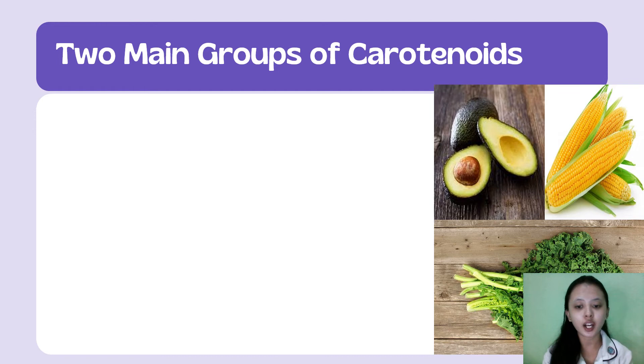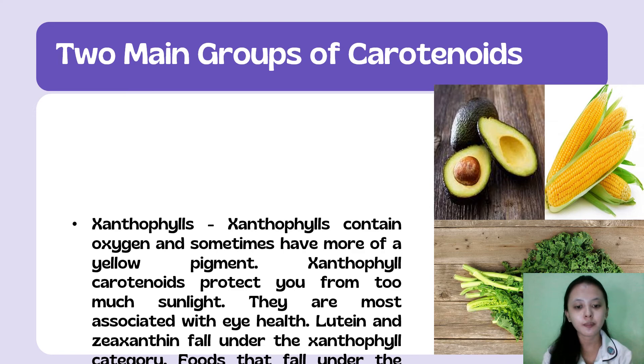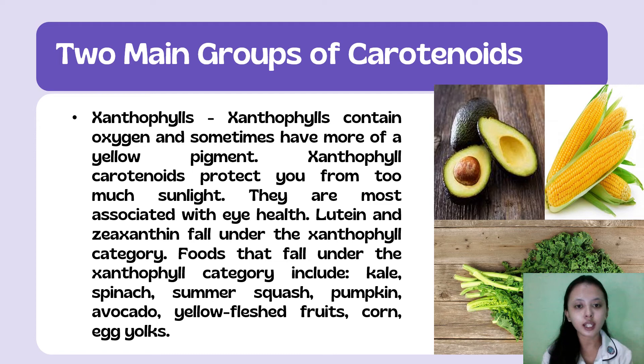Carotenoids are classified into two main groups: xanthophylls and carotenes. Xanthophylls contain oxygen and sometimes have more of a yellow pigment. Xanthophyll carotenoids protect you from too much sunlight and are most associated with eye health. Lutein and zeaxanthin fall under the xanthophylls category. Foods in this category include kale, spinach, summer squash, pumpkin, avocado, yellow-flesh fruits, corn, and egg yolks.